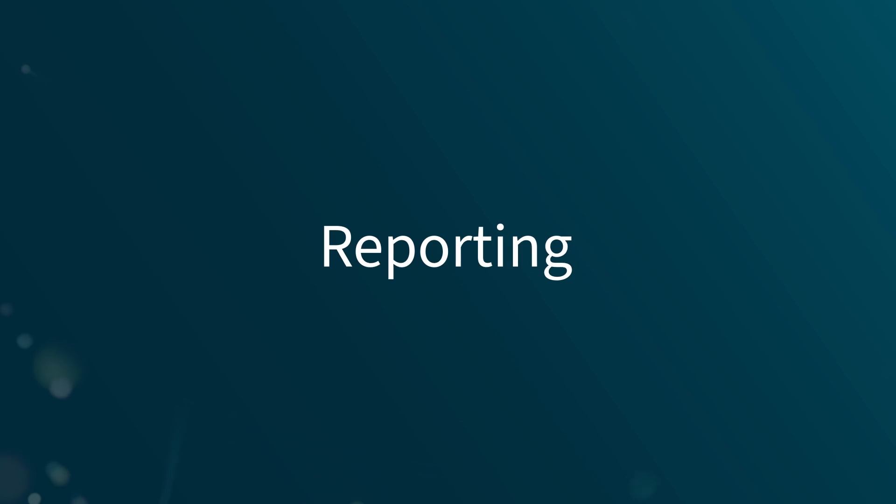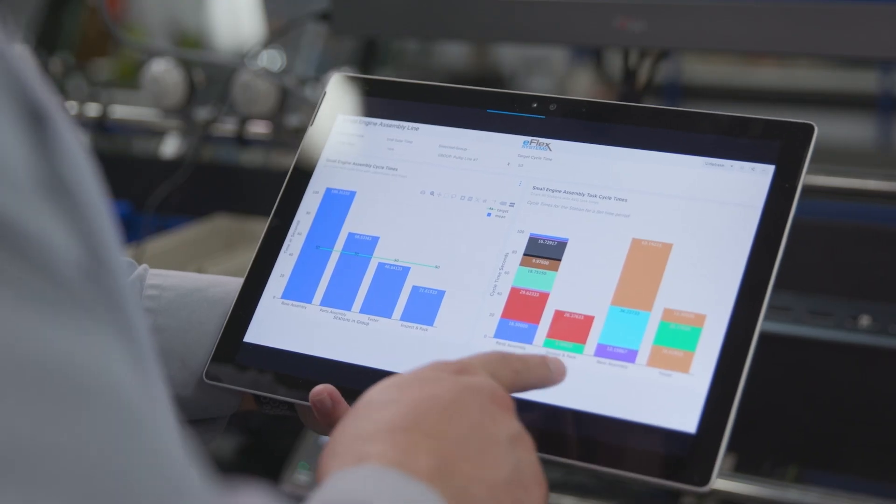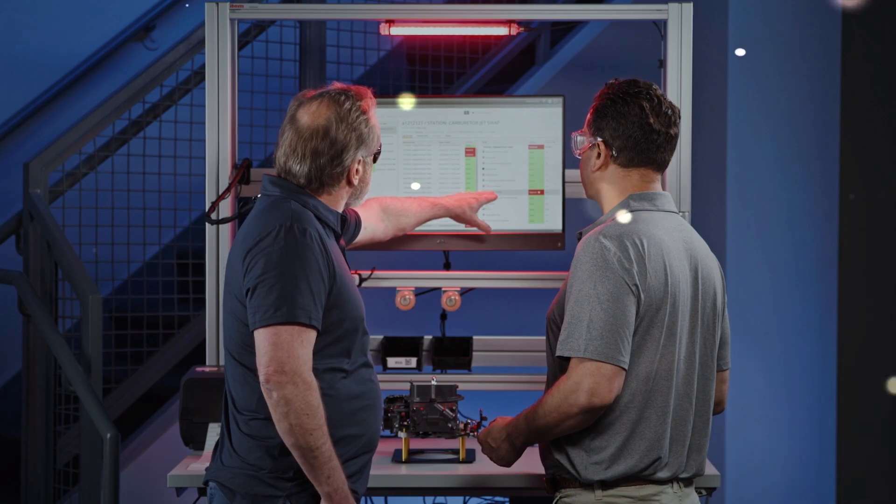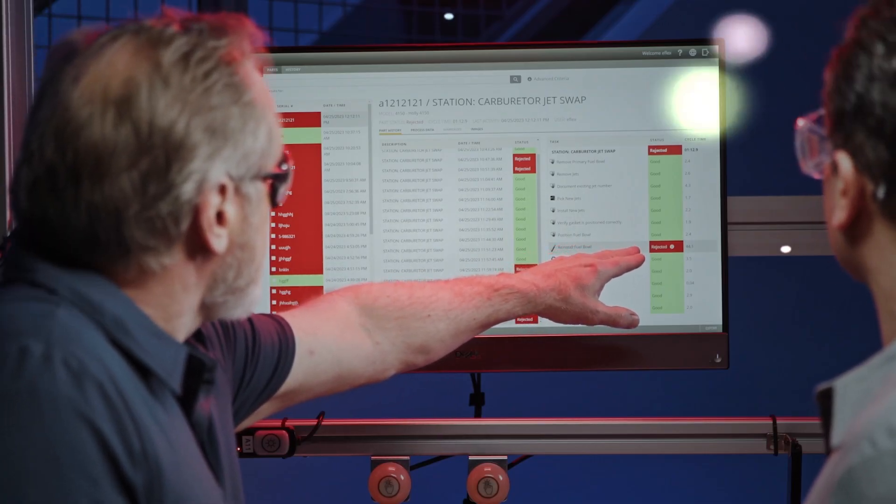Drive continuous improvement with robust reporting and data-driven decisions. From quality summary reports to station cycle times, shift summaries, OEE and so much more, Connected Process Control delivers actionable insights for a competitive advantage.